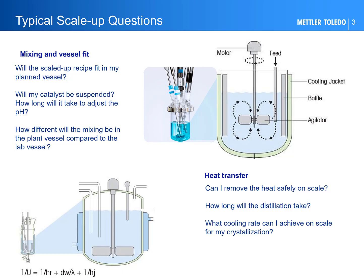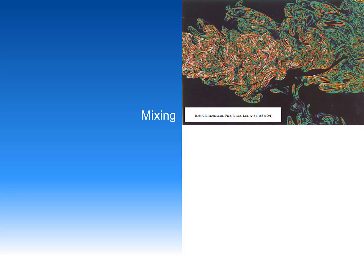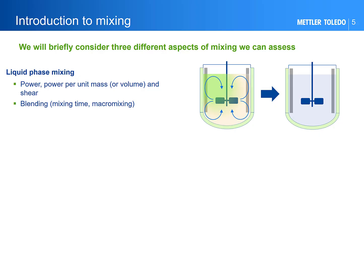In this talk I'm going to give an overview of the basic concepts in mixing and heat transfer with examples of how vessel assessments can be used when scaling from lab to plant. Starting with mixing — the picture here shows the complex nature of turbulent flow. When we talk about mixing we need to think about the phases — solids, liquids, gases — present in the vessel, as there are different mixing duties to consider. In a single liquid phase system we think about the amount of power being put into the liquid, the power per unit mass or volume, as well as blending.